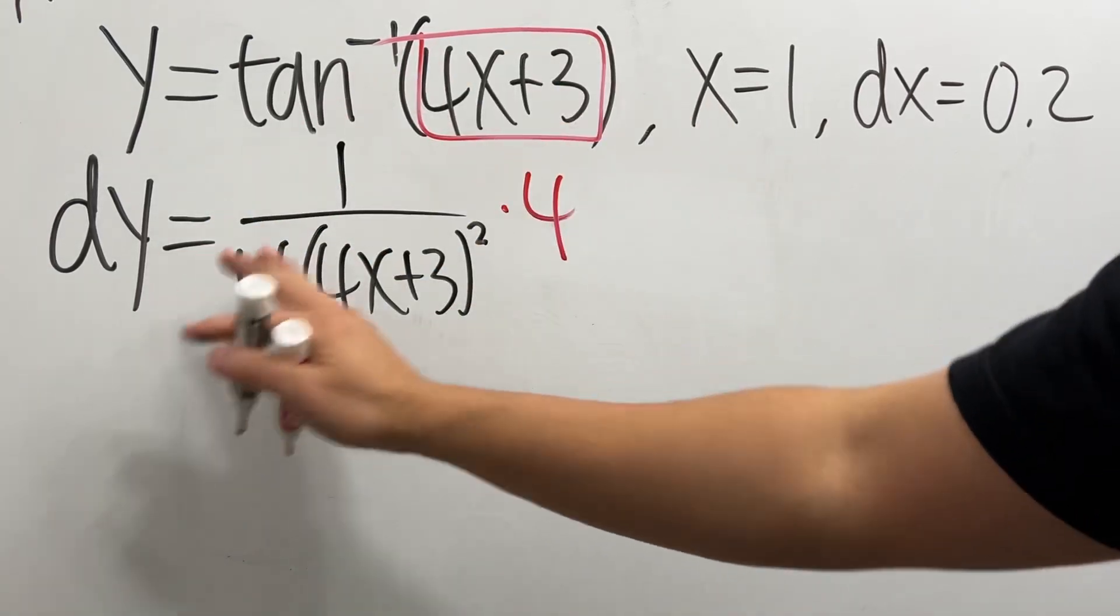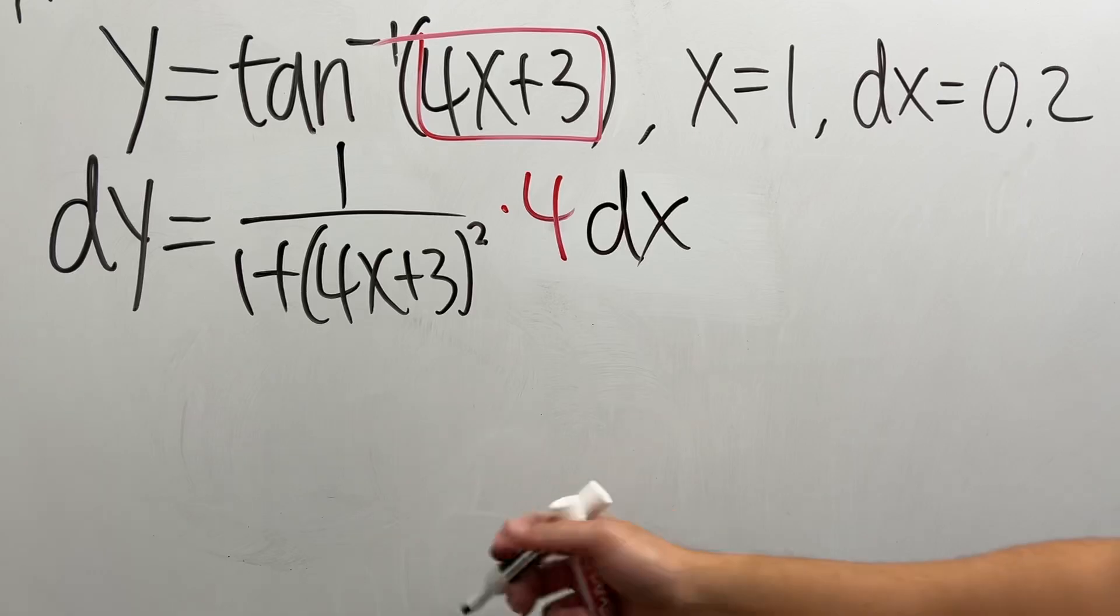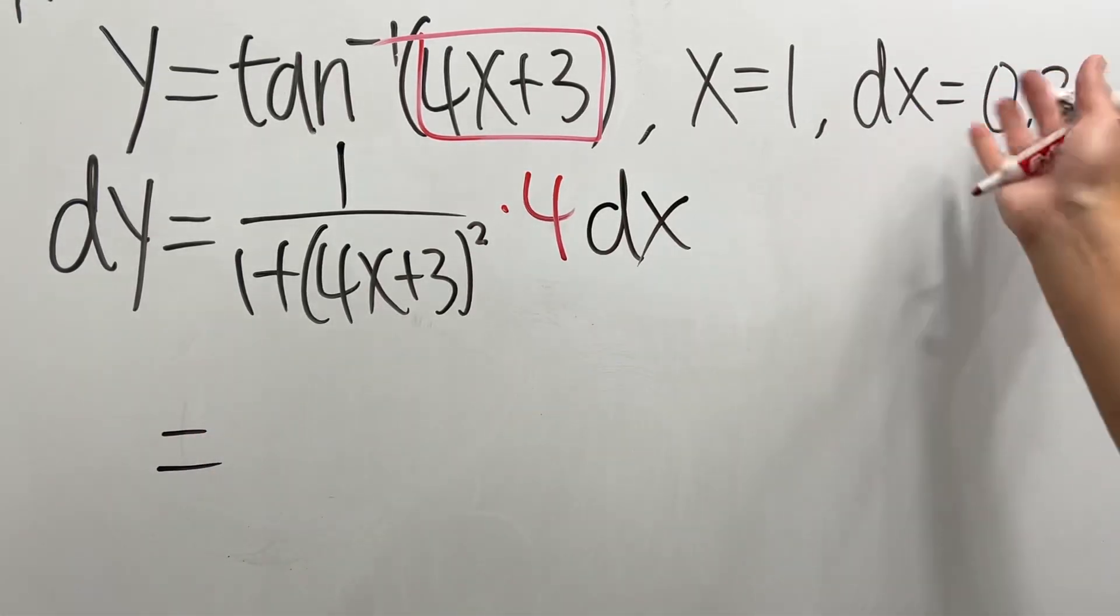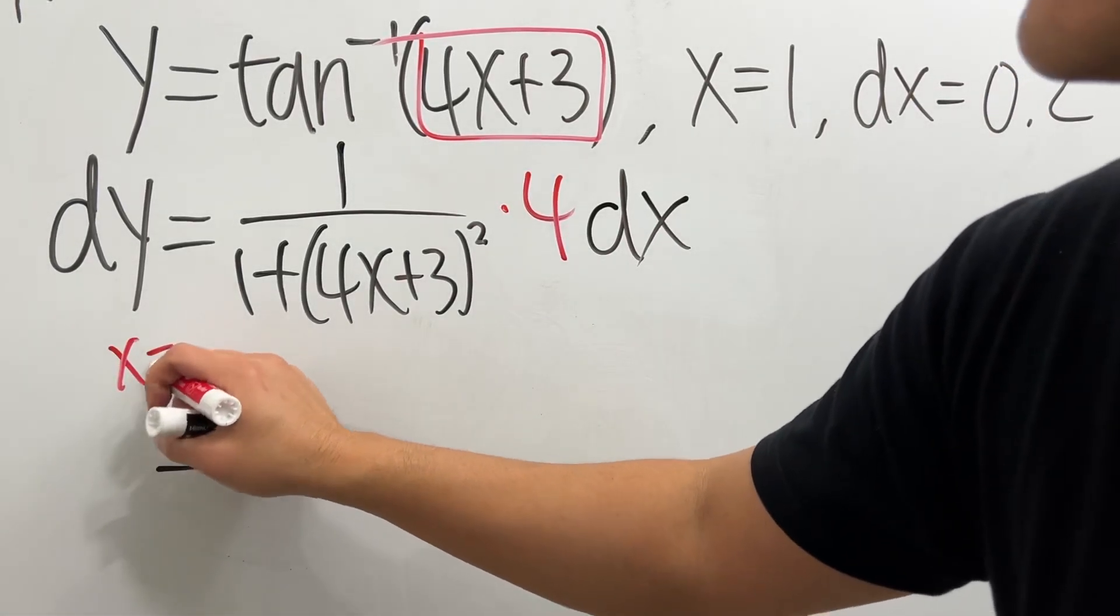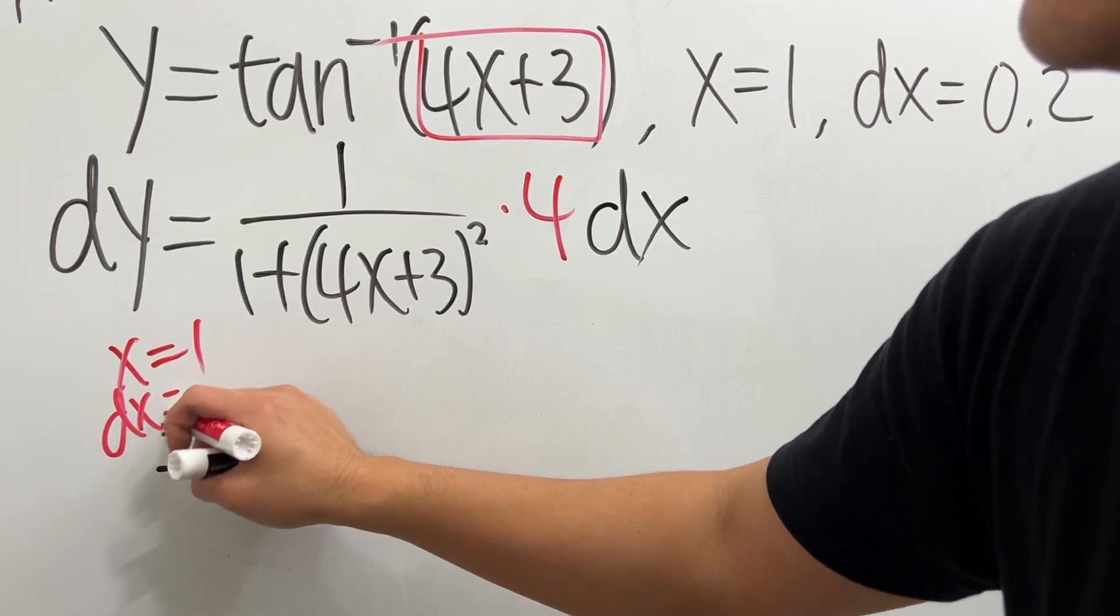And then for differential, make sure you multiply dx right here. And then we can just plug in the numbers that we have. x is equal to 1, and dx is 0.2.